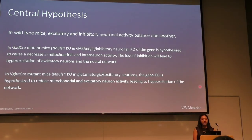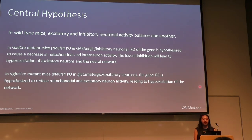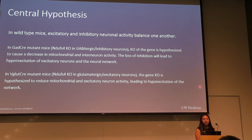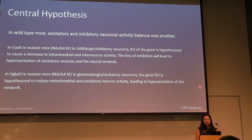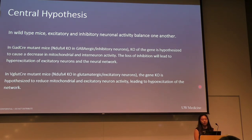In a wild-type mouse, the overall activity of the neural network is balanced through levels of excitatory and inhibitory neural activity. We hypothesized that GABAergic mice, which have an NDUFS4 knockout in their GABAergic neurons, will lead to hyperexcitation of excitatory neurons and overall hyperexcitation of the neural network. On the other hand, VGLUT-CRE mutant mice, which have NDUFS4 knockouts in their glutamatergic neurons, are hypothesized to have overall hypoexcitation of the neural network.